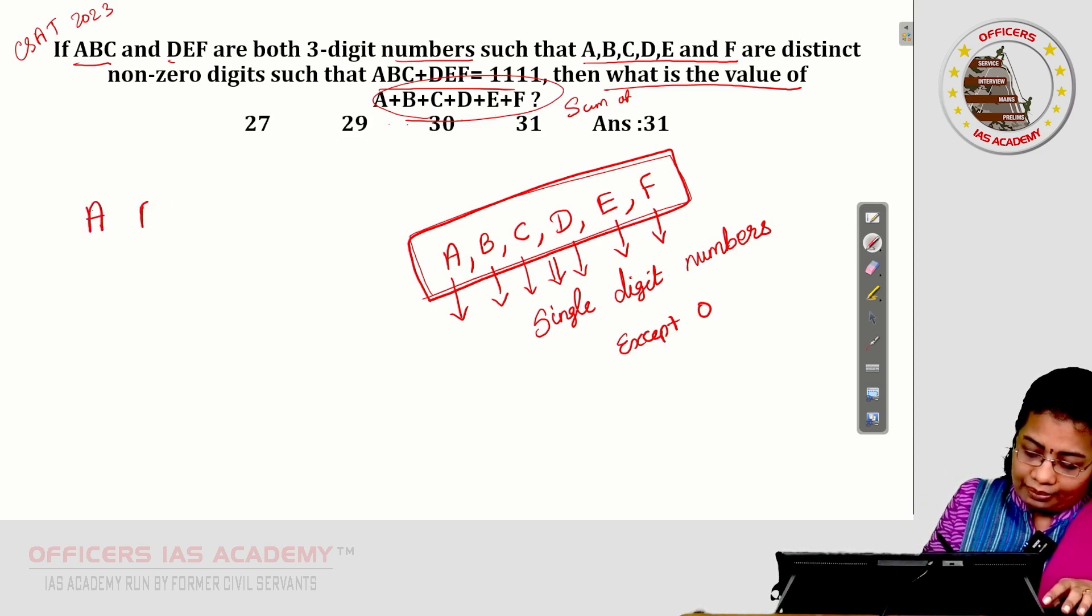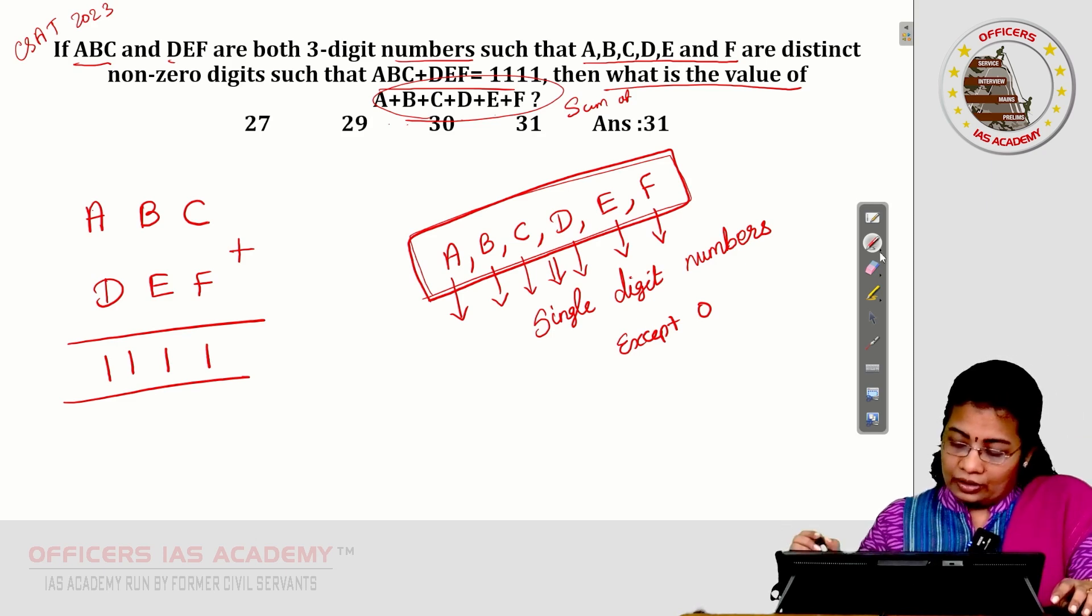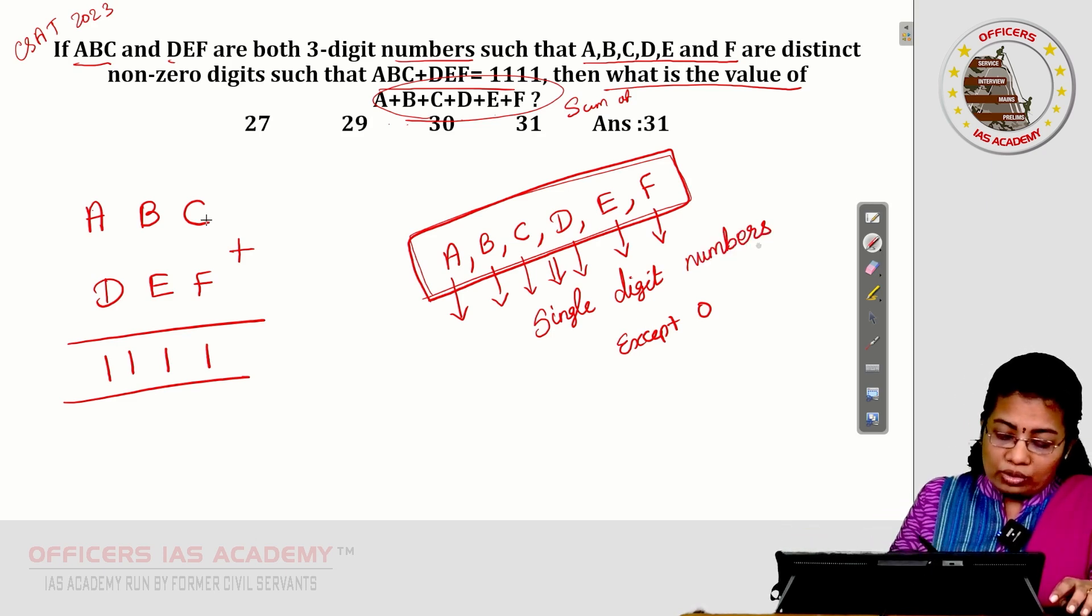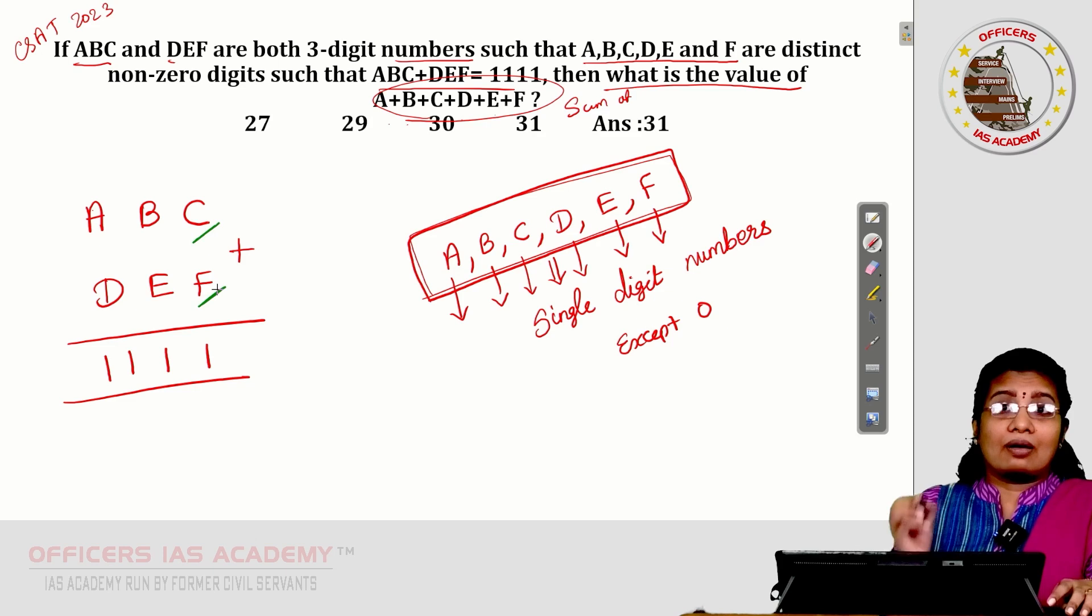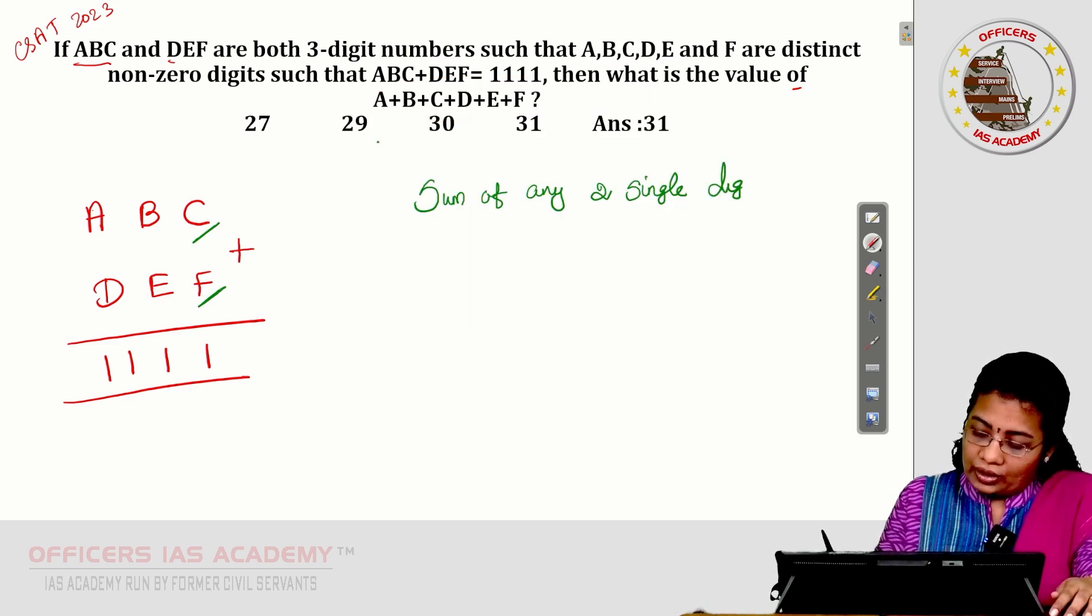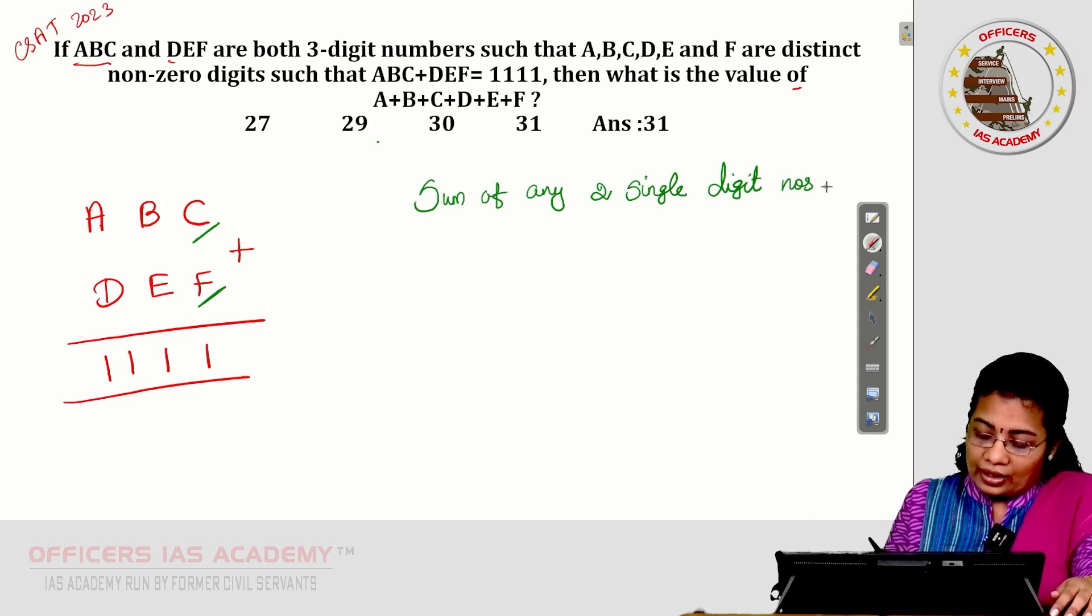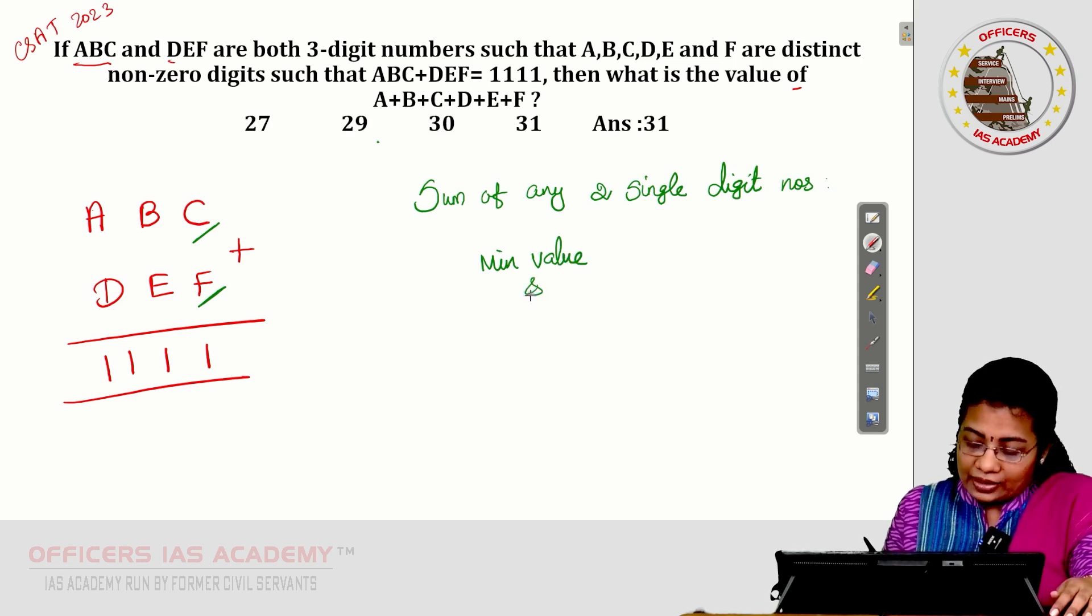When A, B, C add up with D, E, F, the sum we get is 1111. What is the idea when two single-digit and non-zero and different values are added? The sum of any two single-digit numbers. Let us find the minimum value and the maximum value.